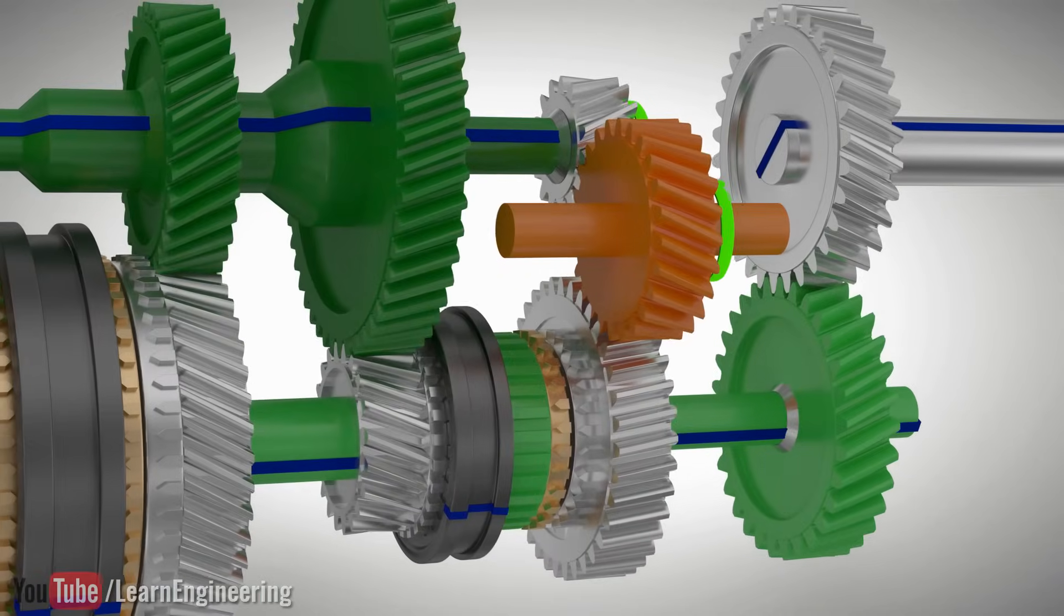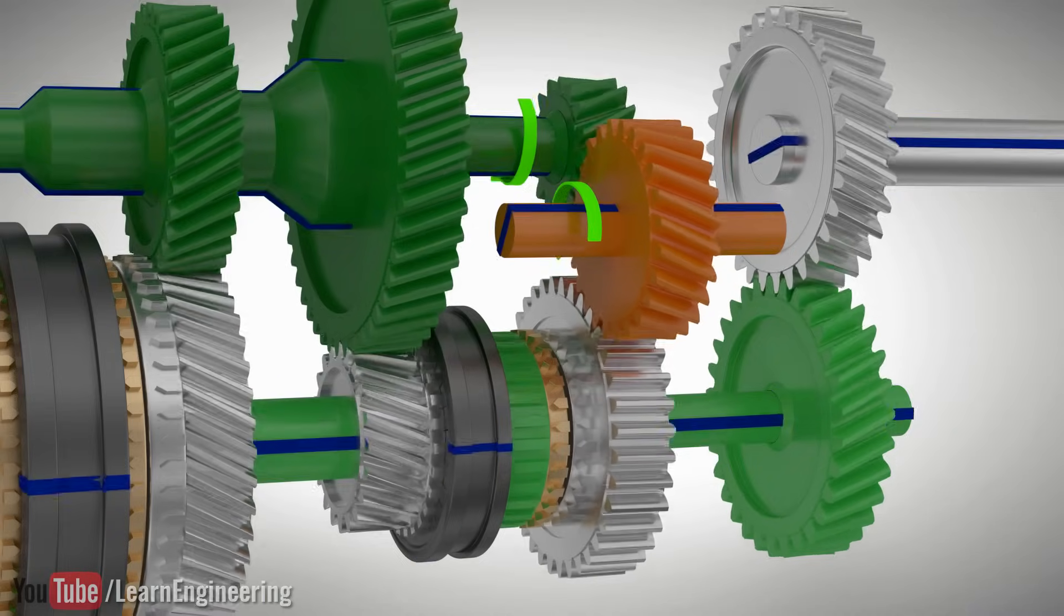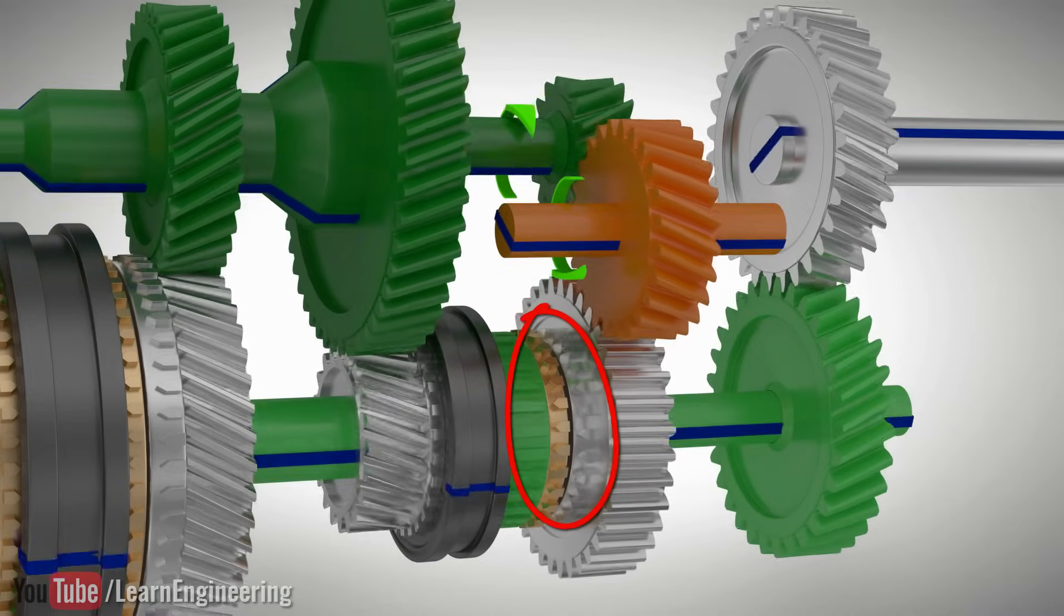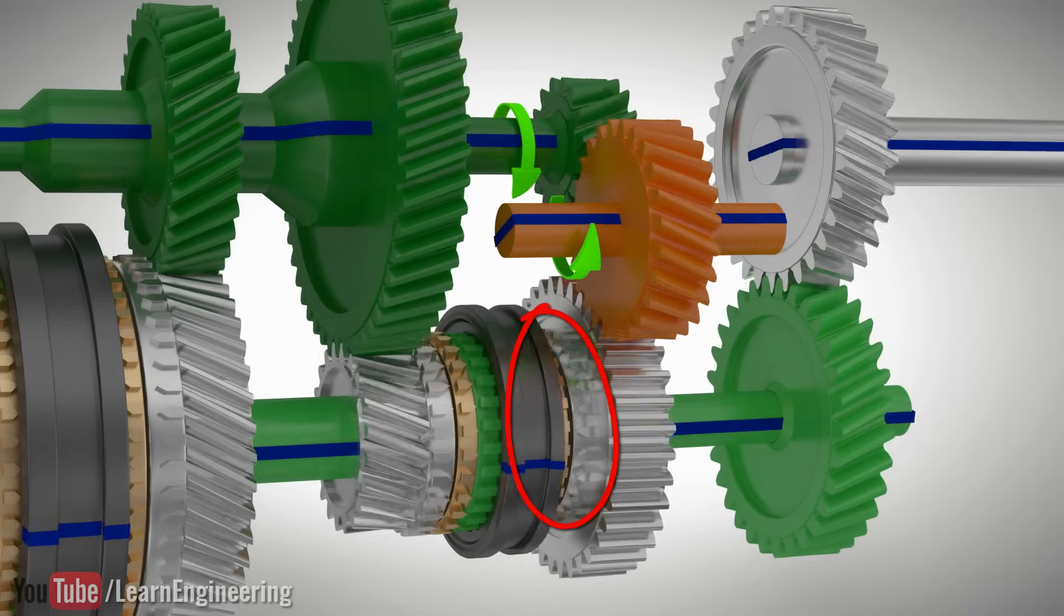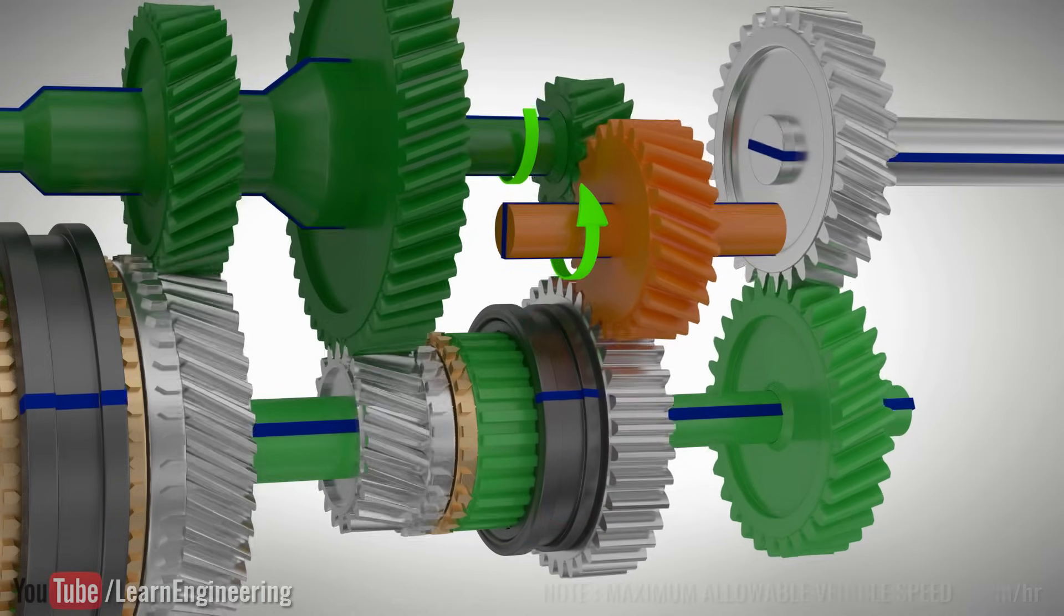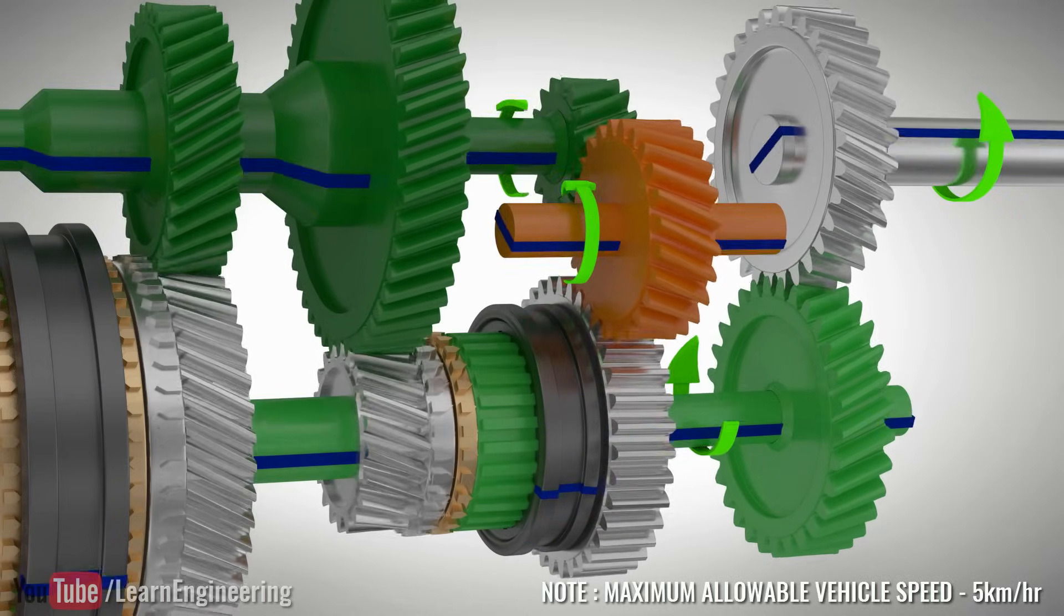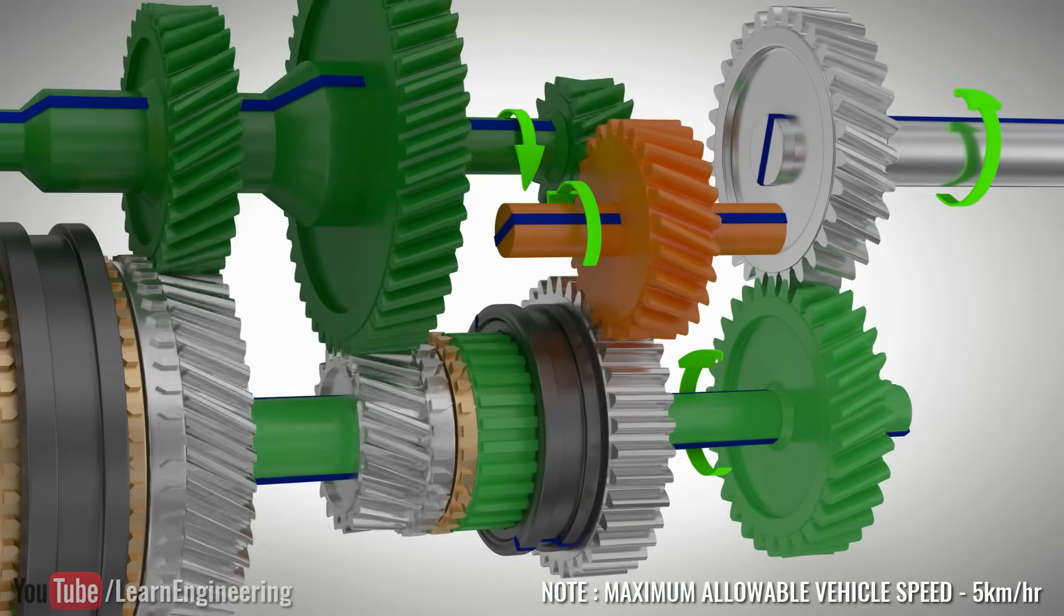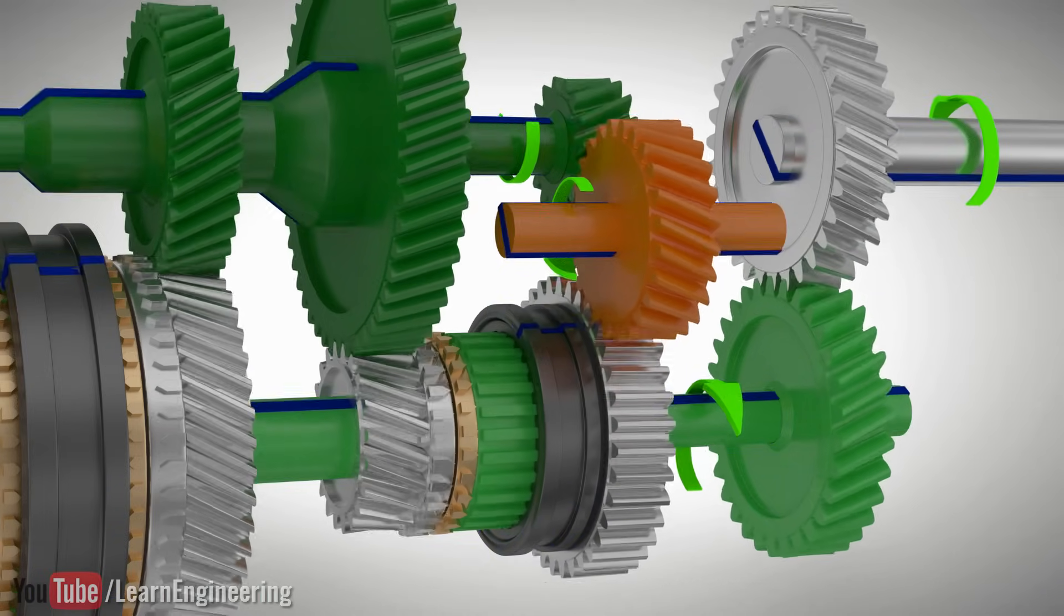Unlike the regular manual transmission, the reverse gear of the DCT has a synchronizer cone-teeth arrangement. This means that even if your vehicle is moving forward, as long as the vehicle speed is low, you can still engage the reverse gear. This is not possible in a regular manual transmission.